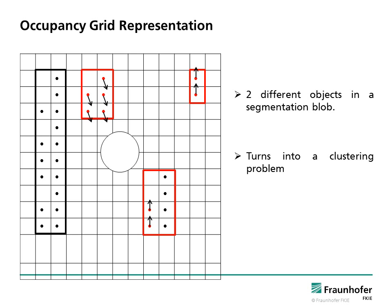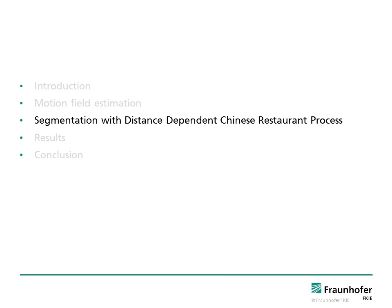After estimating the motion vector of each grid cell, it turns into a clustering problem to determine the number of sub-segment regions representing different objects in a single segmentation blob. We would like to find contiguous regions and learn the number of clusters in each segmentation blob.